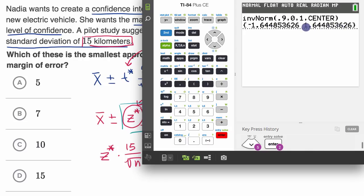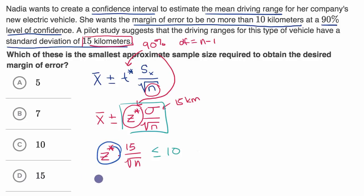roughly 1.645 standard deviations below the mean and that same amount above the mean. So our critical value here is approximately 1.645. So we have 1.645 times 15 over the square root of n is going to be less than or equal to 10.